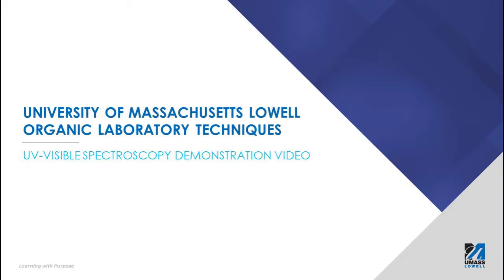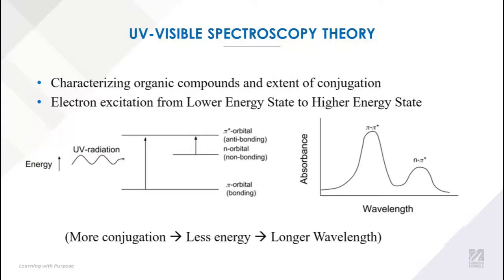This video will demonstrate how to prepare a solid sample for the UV visible spectrometer and how to prepare spectrum data. UV visible spectroscopy is a useful technique for quantifying and characterizing organic compounds and the extent of their conjugation. Organic molecules absorb UV or visual radiation to promote electrons from a lower energy state to a higher energy state.